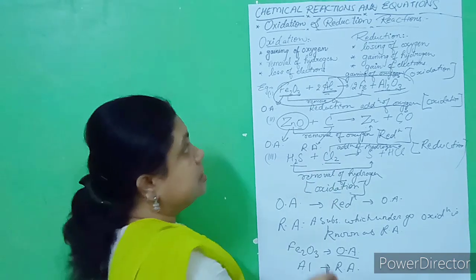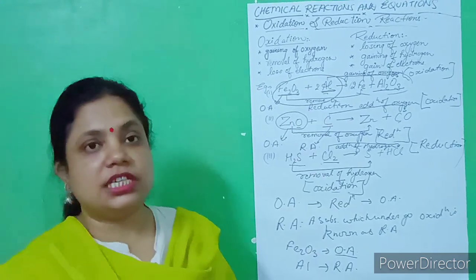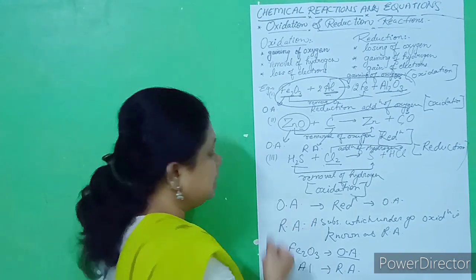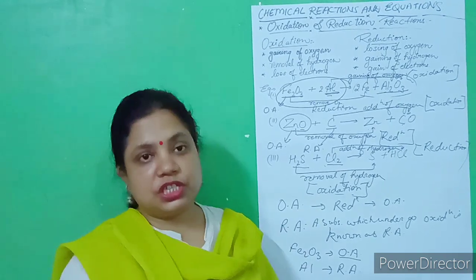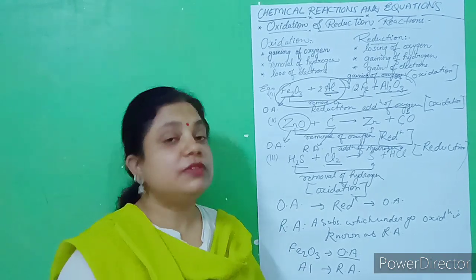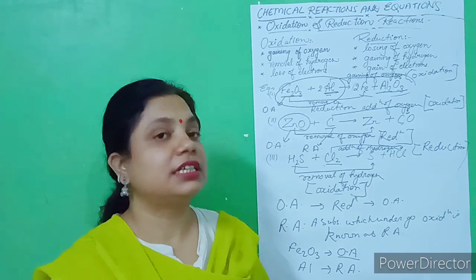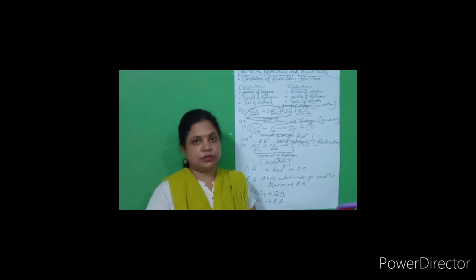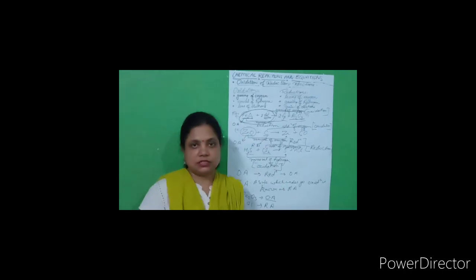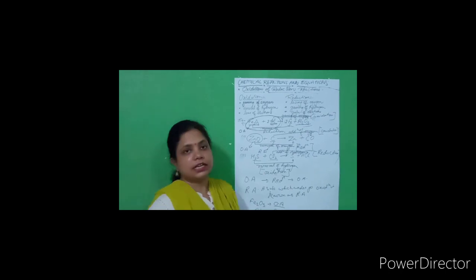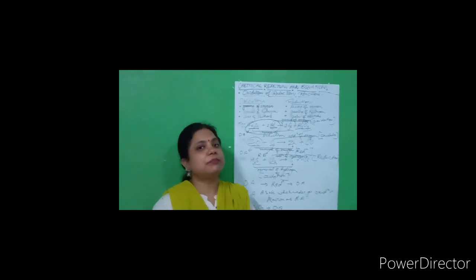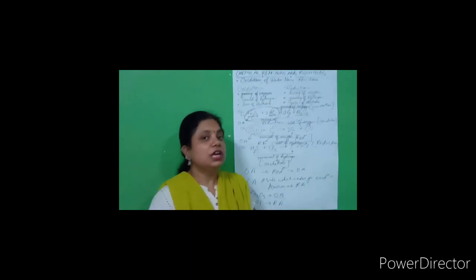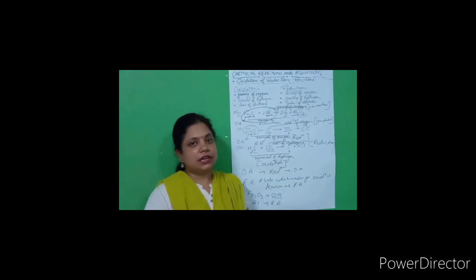So these are the things I have explained today: what is oxidation and reduction reaction, and how to find the oxidizing and reducing agent. Always remember: observe the reactant side first, then go to the product. Practice more questions, and if you have any problems, ask. Thank you and have a nice day.